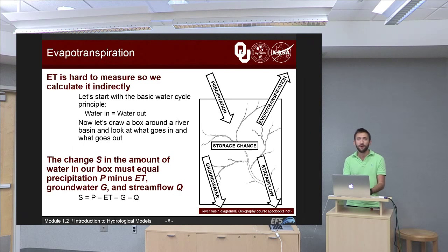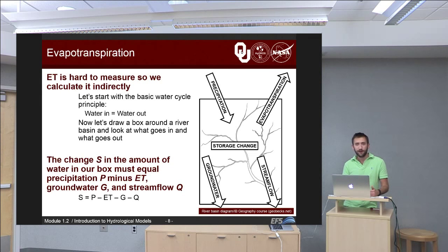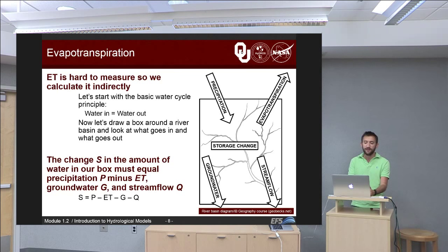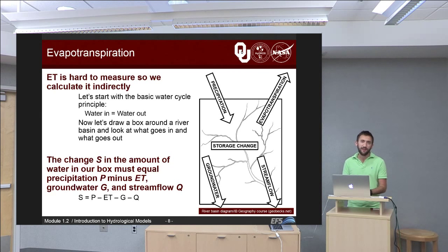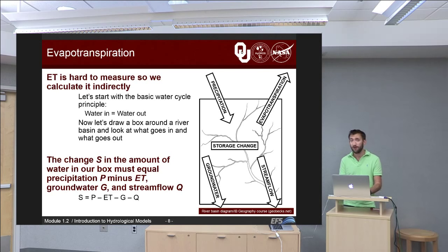Since evapotranspiration is hard to measure, we usually try to calculate it indirectly. Starting with a basic principle of the water cycle: water is neither created nor destroyed — water in equals water out. If we draw a box around a river basin, the arrow pointing in is just precipitation, and there are three arrows pointing out: groundwater, stream flow, and evapotranspiration. Inside the box we have storage change, S. So the equation becomes: S = P minus ET minus G (groundwater) minus Q (stream flow). In hydrology, Q is typically the letter used to represent stream flow.